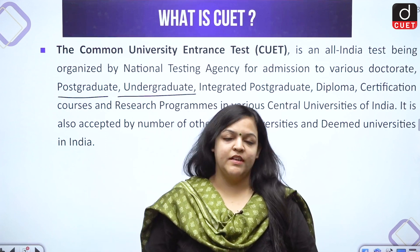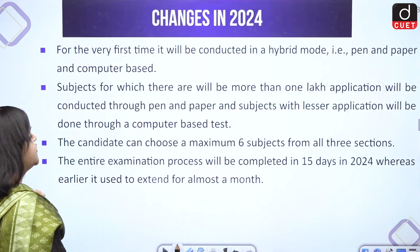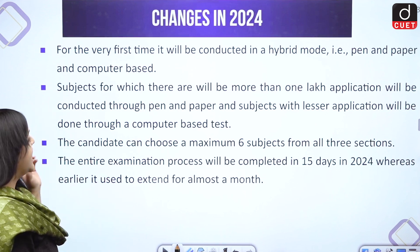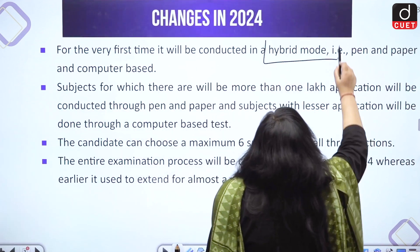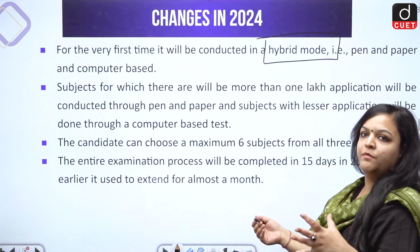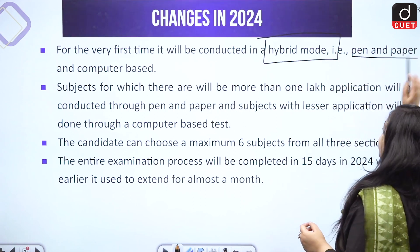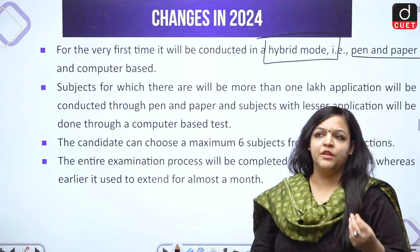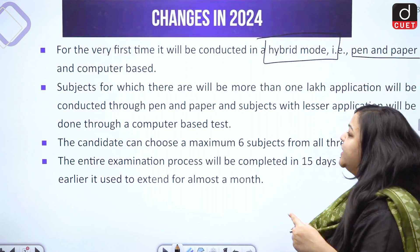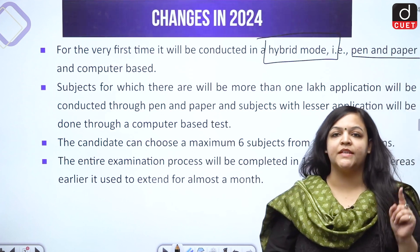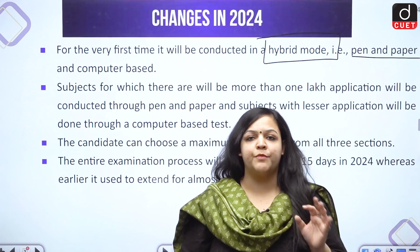Now let us understand the changes announced in 2024. The first change is something really great — for the first time, the examination is going to be conducted in hybrid mode. Hybrid mode basically means the examination will either be conducted on the basis of pen and paper on OMR sheets, or it will be a computer-based examination. Subjects with more than one lakh applicants will be conducted on pen and paper, while subjects with fewer applicants will be conducted through computer-based mode.